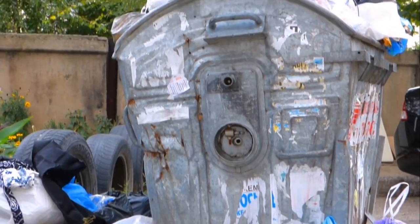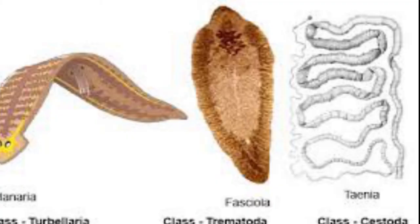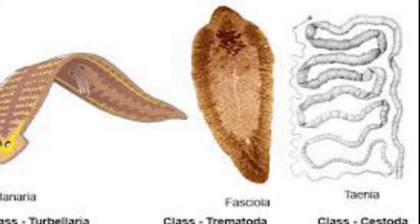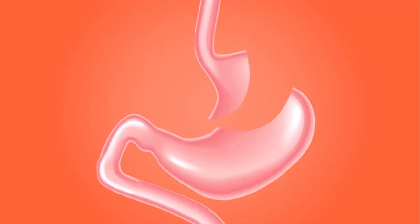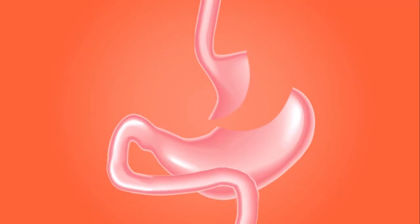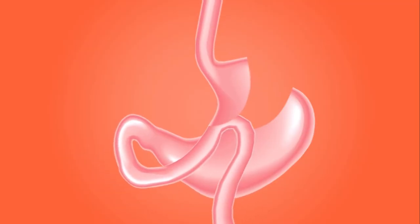We also talk about the platyhelminthes, or the tapeworms. Already I've told you that we have the trematodes, or the flukes, and then we have the cestodes, or the tapeworms. These are all parasites found in man, and we'll talk about them in greater detail.